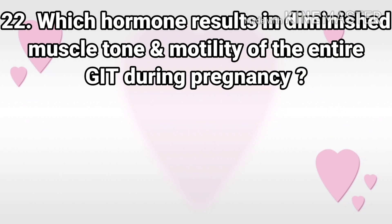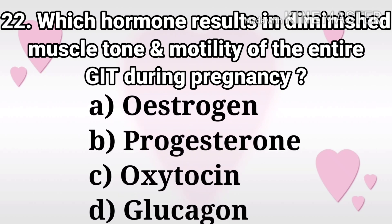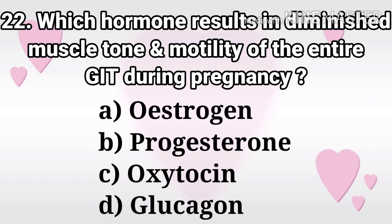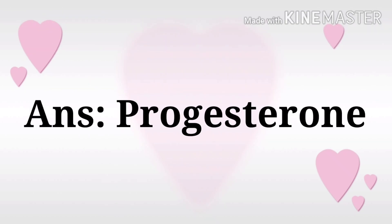Next question: Which hormone results in diminished muscle tone and motility of the entire GI tract during pregnancy? The options are estrogen, progesterone, oxytocin, and glucagon. The answer is progesterone.